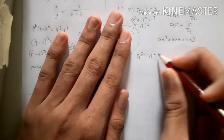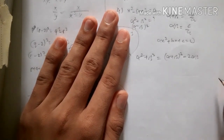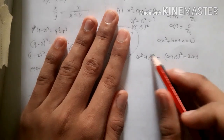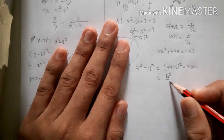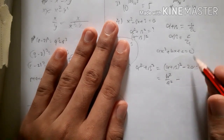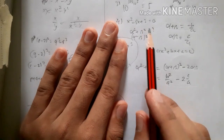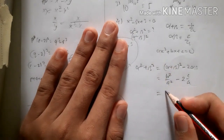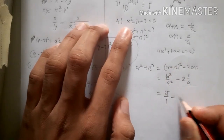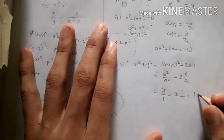To find alpha squared plus beta squared, use the identity: alpha plus beta squared minus 2 alpha beta. Alpha plus beta is negative b over a, so squaring gives b squared over a squared. Alpha times beta is c over a. From our equation, b is negative 5, a is 1, c is 3, so the answer is 25 minus 6, which equals 19.